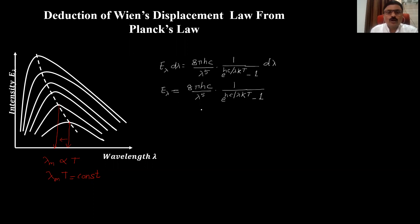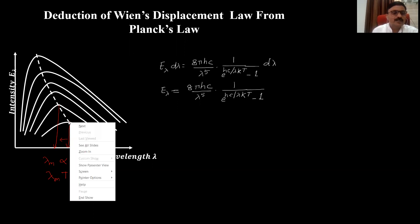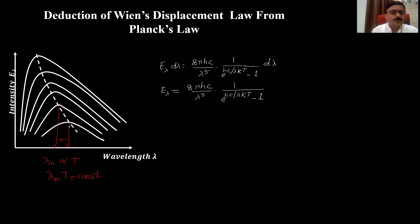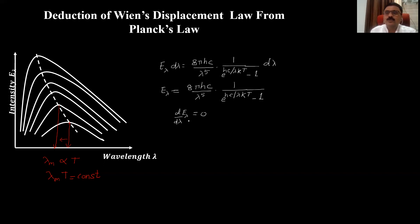Now we have to obtain Wien's displacement law. The condition for the maximum intensity point is that mathematically we can write, for the maximum intensity corresponding to wavelength λm: d/dλ (E_λ) = 0. At this particular condition, wavelength λ equals λm, which is the wavelength corresponding to maximum energy or maximum intensity at that particular temperature of the black body. Solving this will give us the required Wien's displacement law.